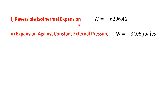Let's recap what we've learned. During reversible isothermal expansion, the system performed negative 6,296 joules of work — this represents the maximum possible work output. In the irreversible expansion against constant pressure, the work was only negative 3,405 joules, demonstrating how real processes lose efficiency compared to ideal reversible ones. Got questions? Drop them in the comments below. For more Thermodynamics Explained Simply, don't forget to subscribe. Thanks for watching, and I'll see you in the next lesson.